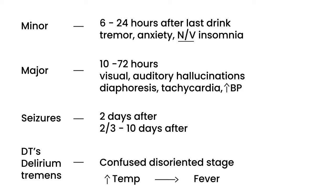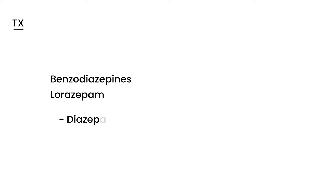Those are the four levels of severity of alcohol withdrawal. Fortunately, there is a treatment, and the treatment of choice is benzodiazepines. The most commonly used and most commonly tested is lorazepam. On clinical vignettes they'll also test you on diazepam, brand name Valium, and another commonly tested one — Librium, whose chemical name is chlordiazepoxide.